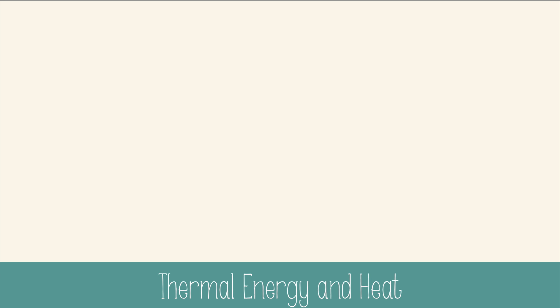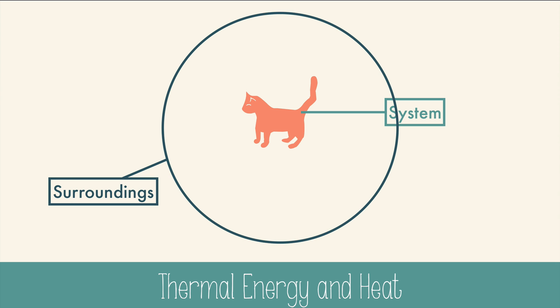When we talk about heat, we have to specify two things. Our system, which is the item we're focusing on, and the surroundings with a defined limit. I chose a cat because I heard the internet likes them. This cat is alive and metabolizing the food it ate, and it's giving off heat, which goes from the system to the surroundings.